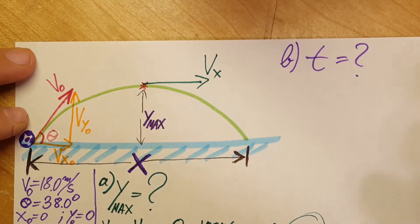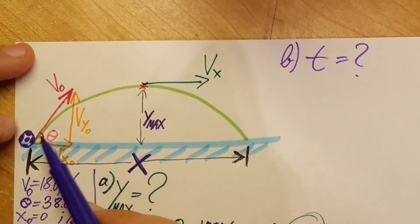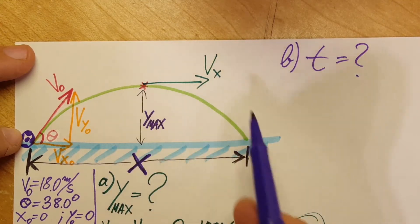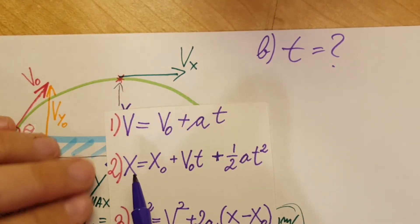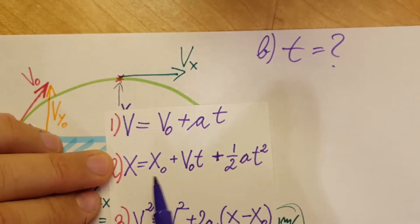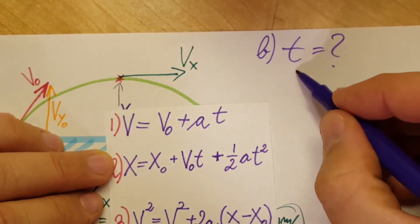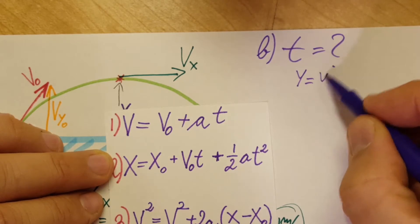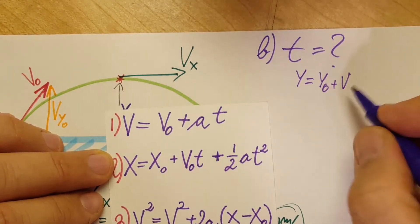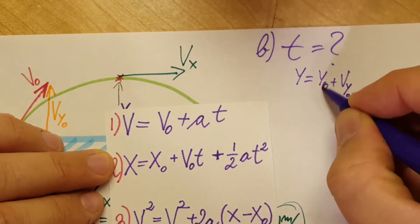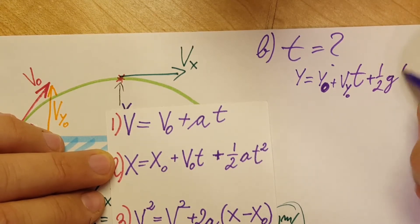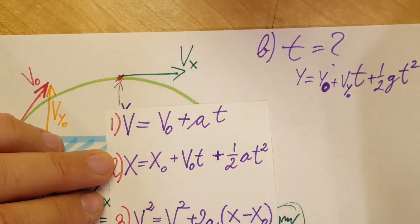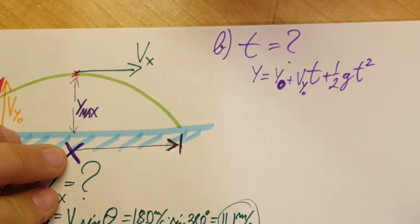Okay, part b. Part b they're asking us to find the time that it takes for the ball from here to go all the way here. Kinematics problem, we're gonna use kinematics formula. We're gonna use this one right here, but we're gonna use it in the y dimension so I'm gonna rewrite it for the y dimension: y = y_naught + v_y_naught·t + ½·g·t². And there's our formula that we're working with right now.